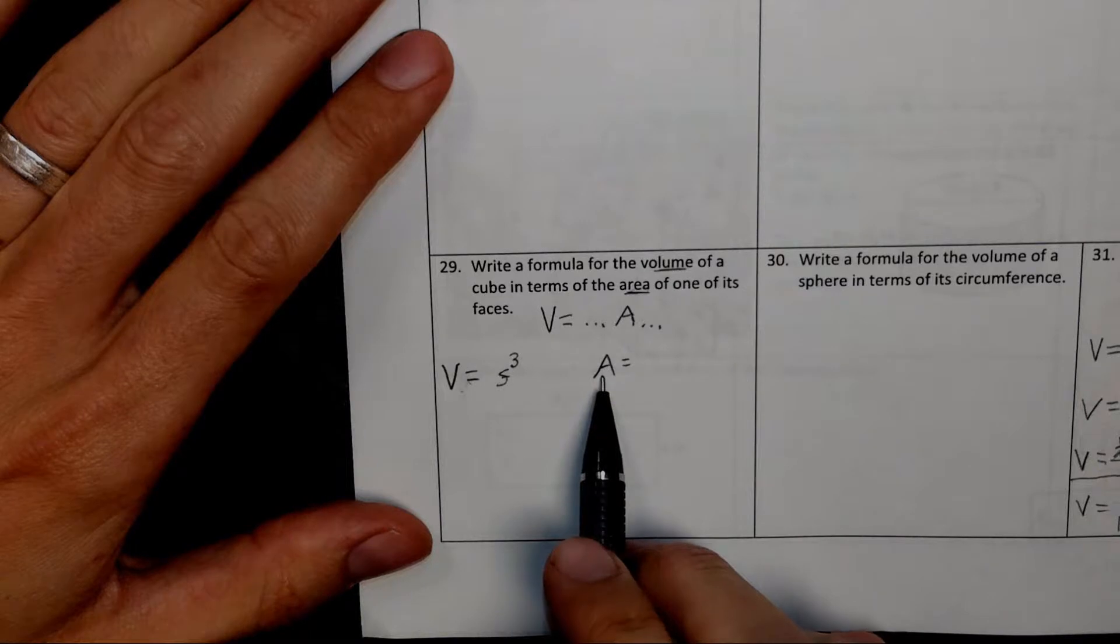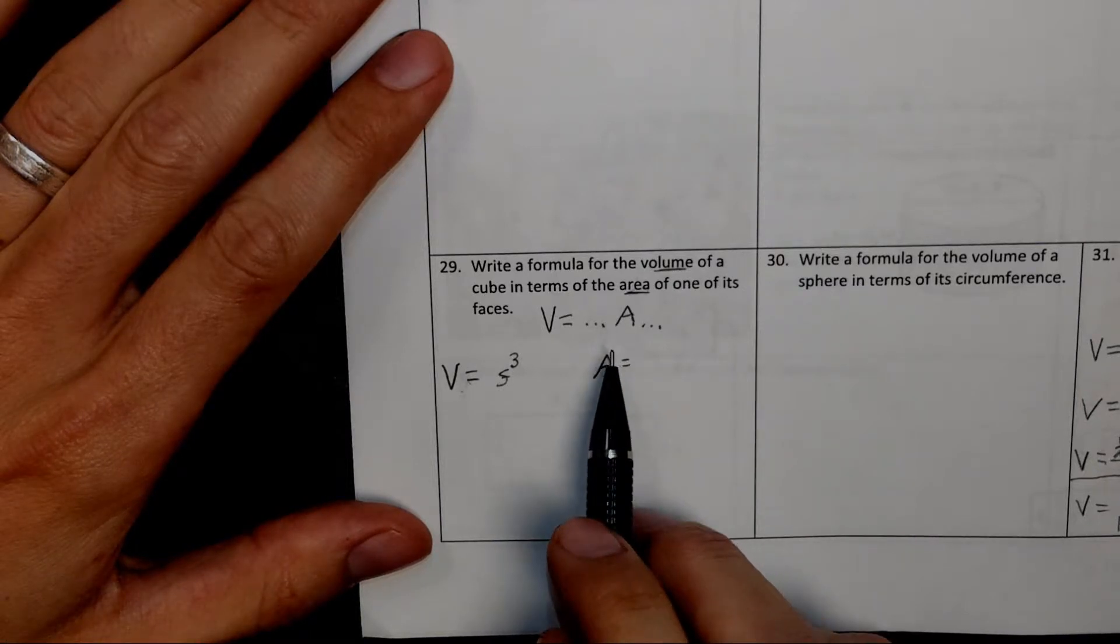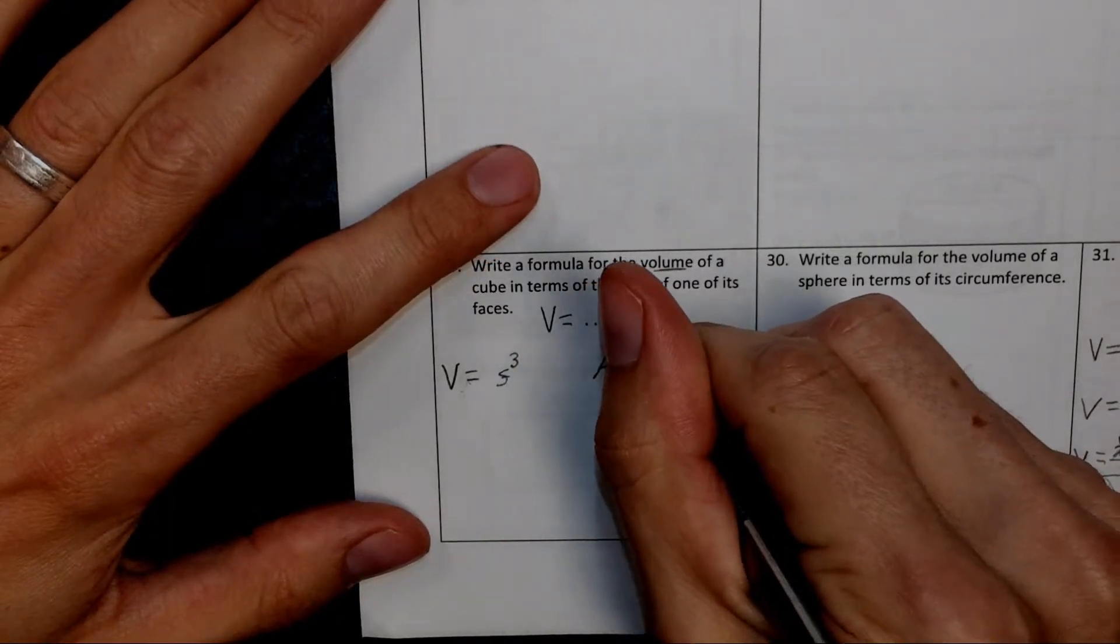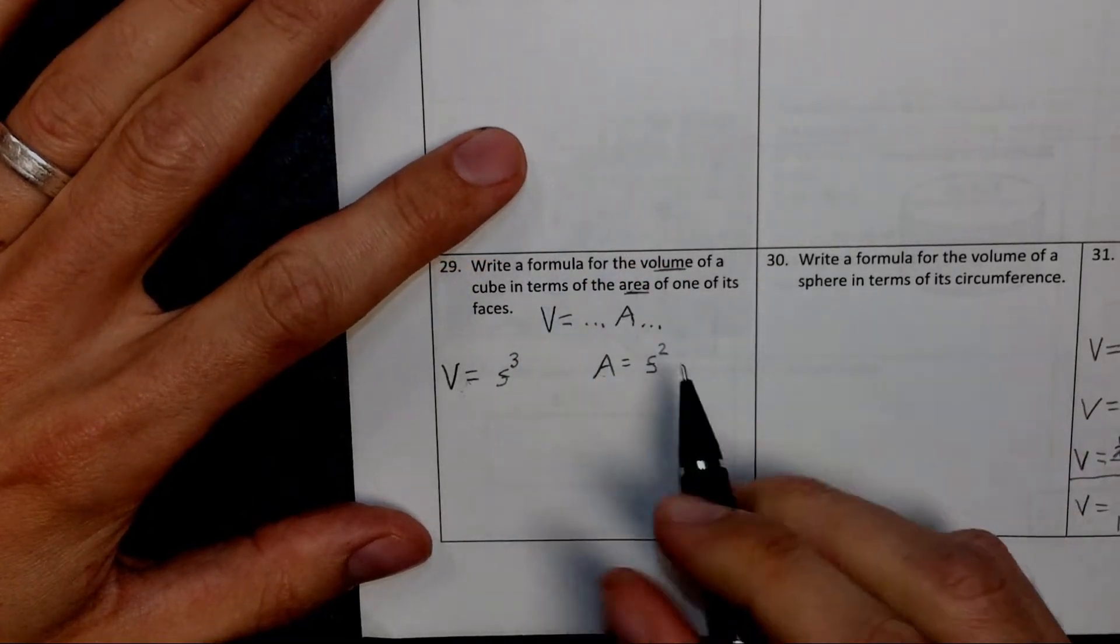So how do we calculate the area of one side of a cube? Well, the sides, the faces of the cube are squares. So the area would be the area of a square, which is the side length squared.